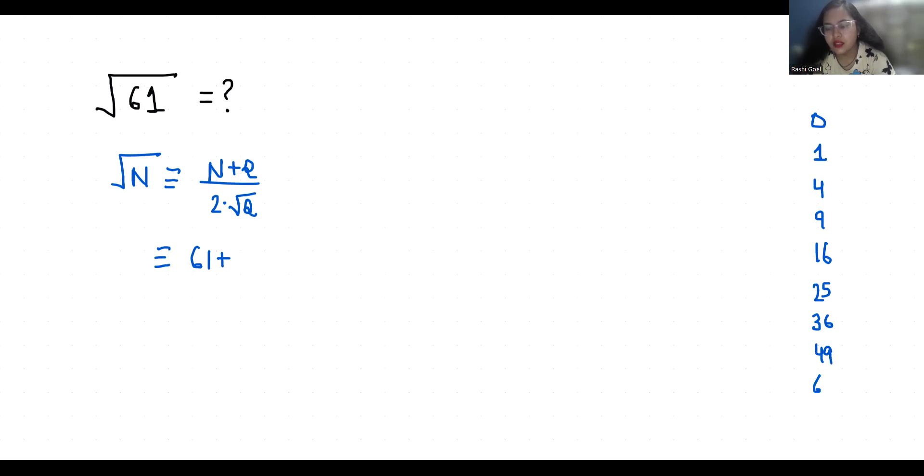The nearest square is 64, greater than 61. So it's 61 plus 64 by 2 times square root of 64.